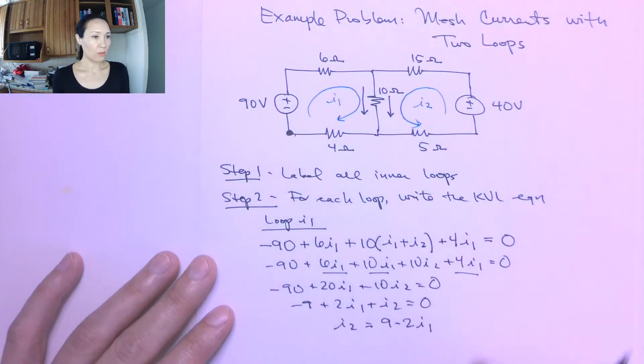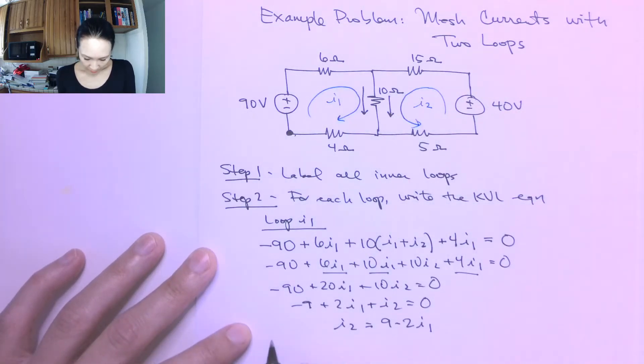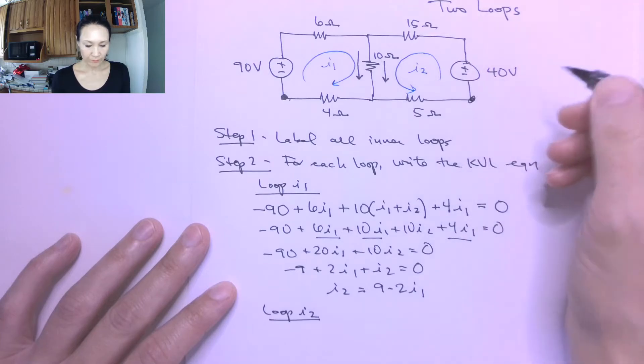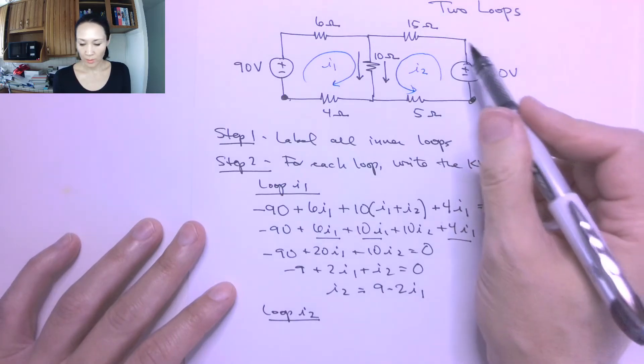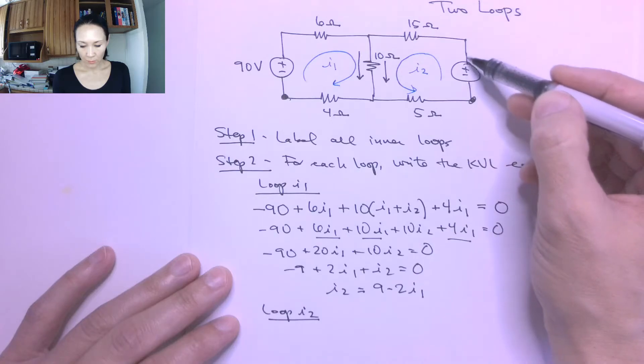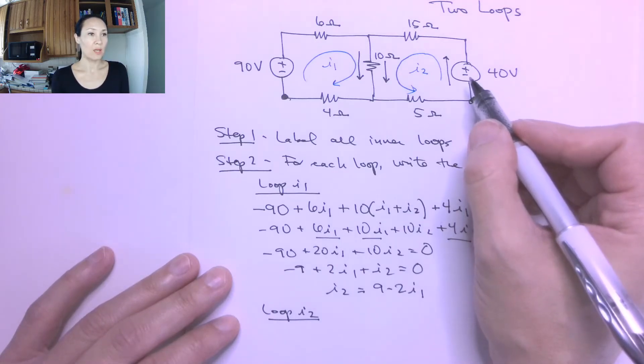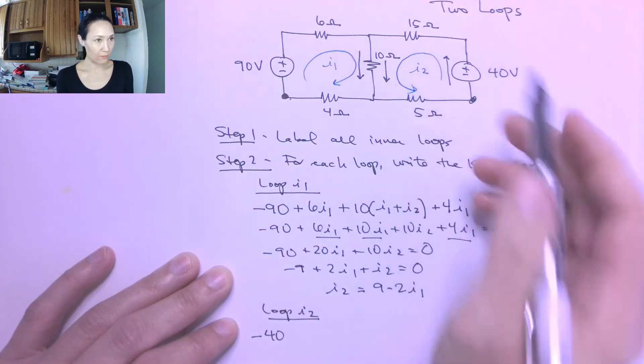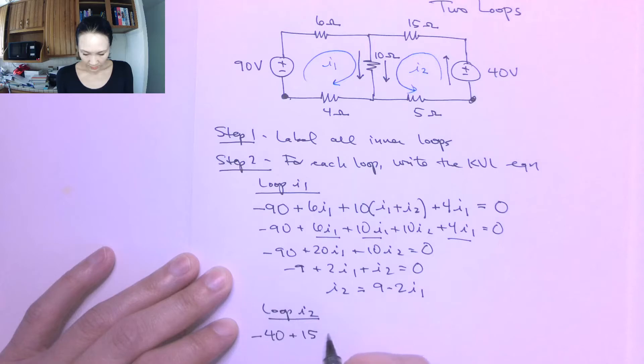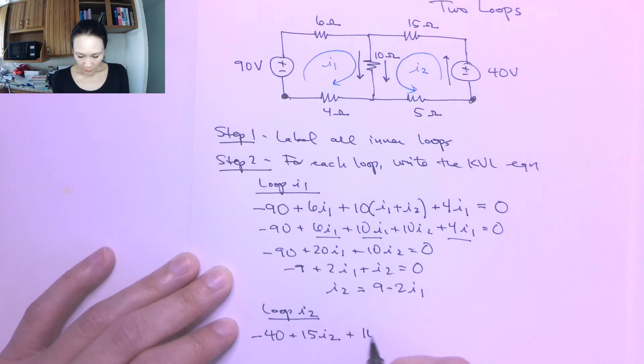Okay, great. So this is my loop 1 equation. Now I want to write, do the same thing for my loop I2 equation. So at loop I2, now if I start here and I walk around this I2 loop, you can really start anywhere. You just have to make sure that you go all the way around until you end the same place where you started. And the first thing I'm going to encounter is this 40 volt source. So going in this direction using the passive sign convention, this is going to be a negative 40 volts. The next thing I encounter is the 15 ohm resistor. So this will be plus 15 times I2 because I2 is the only current that touches that resistor.